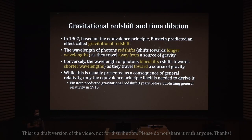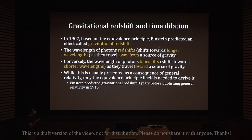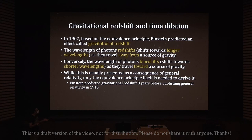In 1907, based on the equivalence principle, Einstein predicted an effect called gravitational redshift. The wavelength of photons redshifts — shifts toward longer wavelengths, since red has a longer wavelength than blue — as they travel away from a source of gravity. Conversely, the wavelength of photons blueshifts — shifts toward shorter wavelengths — as they travel toward a source of gravity.